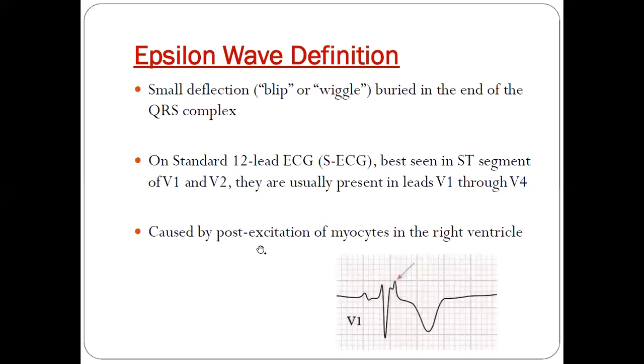Because of this deposition, some of the myocardial cells get hidden within the fat tissues and they get delayed activation, leading to delayed waves called epsilon waves. They follow after the QRS; there is delayed activation of the hidden myocytes within the fatty tissues.